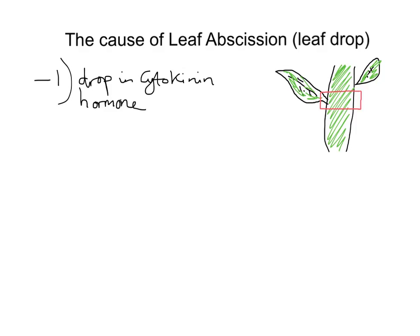In terms of phloem transport — and phloem is the vessel that carries things like sugars within the plant — the nutrients simply flow back into the main body of the plant, which is the stem. So we're getting these nutrients essentially coming back into the stem via the phloem. We don't want to put nutrients into the leaf that's about to fall, so we withdraw nutrients. That is the second stage.